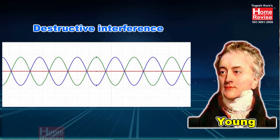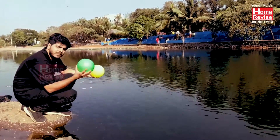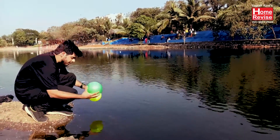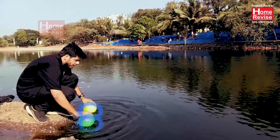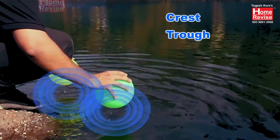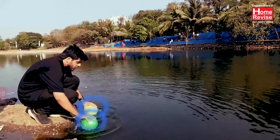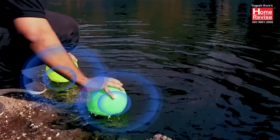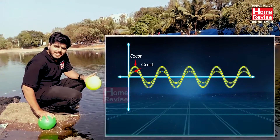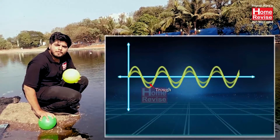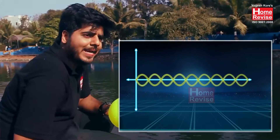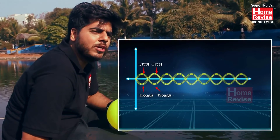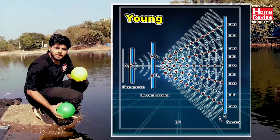Now we are not going to perform Young's double slit experiment with light, but we are going to understand it with the help of water waves. With the help of these balls I'm going to produce waves in water. As you can see, if I tap these balls on water, waves are produced — crest, trough, crest, trough. Using two balls I'm creating two waves. At some points the waves are of minimum amplitude and at some points they are of maximum amplitude. Whenever crest meets crest, it results in constructive interference; trough meets trough also results in constructive interference. When crest meets trough or trough meets crest, it results in destructive interference. This is what Young's double slit experiment explains.